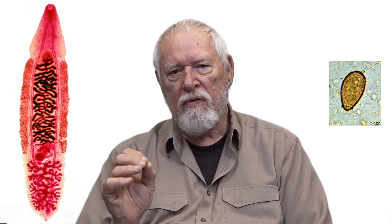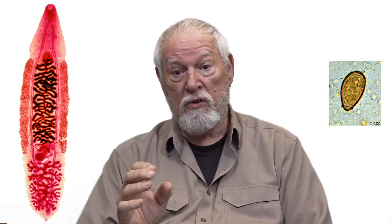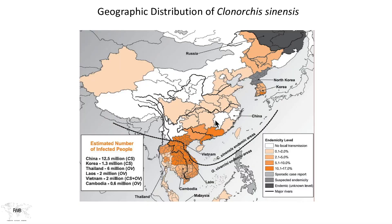Clonorchus sinensis has a very defined geographic distribution. It's found mostly throughout Southeast Asia, as you can see in this map. There are some endemic centers in the Korean Peninsula as well, but most of Clonorchiasis is acquired throughout Southeast Asia, particularly Laos, Cambodia, Vietnam, Thailand, and southern China.